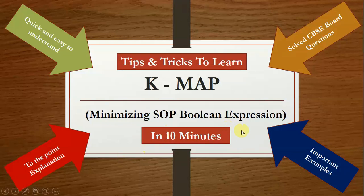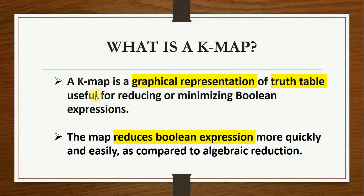Greetings everyone, you are welcome here. In this video I am going to talk about KMAP and how we can reduce SOP Boolean expressions using KMAP. A KMAP is a graphical representation of a truth table which is useful for reducing or minimizing Boolean expressions. Although we can reduce Boolean expressions using the algebraic reduction method, Boolean expressions can be more quickly and easily reduced with the help of KMAP.